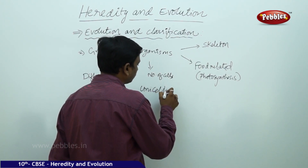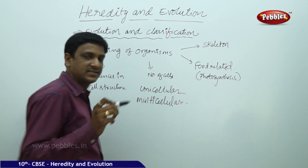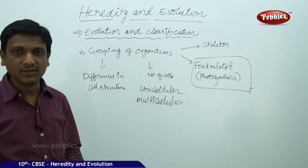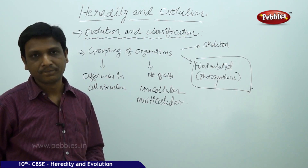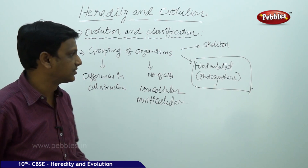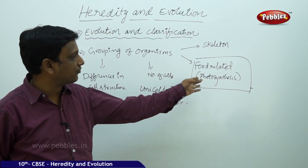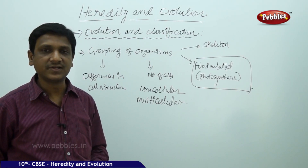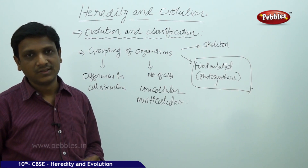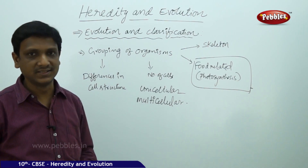Unicellular organisms have only one cell throughout their life, while multicellular organisms have many cells. Another characteristic is food-related. Even though organisms may be multicellular, not all are capable of producing their own food. Green plants are able to prepare their own food by photosynthesis, using carbon dioxide and water to produce glucose. Animals cannot carry out photosynthesis. Based on whether the organism can carry out photosynthesis or not, classification is also done.